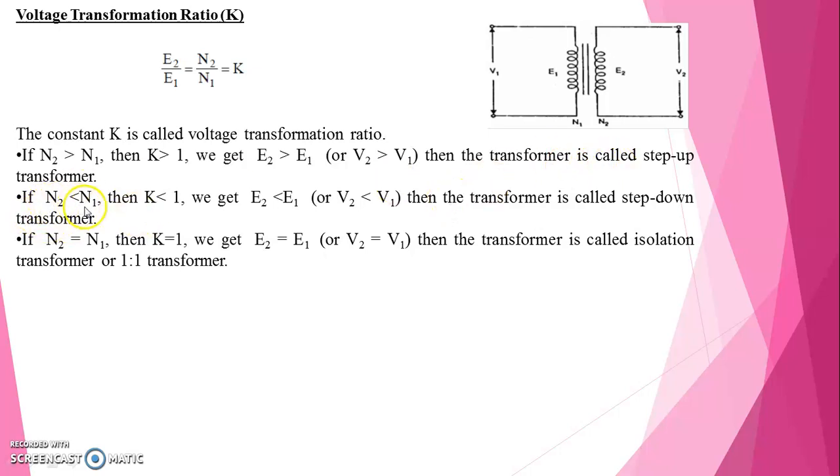For step down transformer N2 value should be lesser than N1. If N2 is equal to N1 then k is equal to 1, where E2 also equal to E1, similarly V2 is equal to V1. Then the transformer is called isolation transformer or 1 is to 1 transformer.